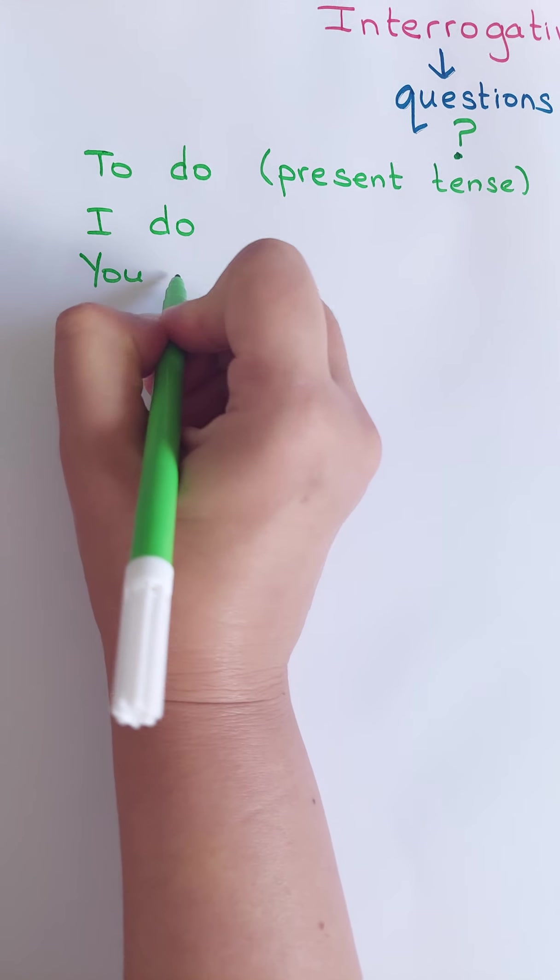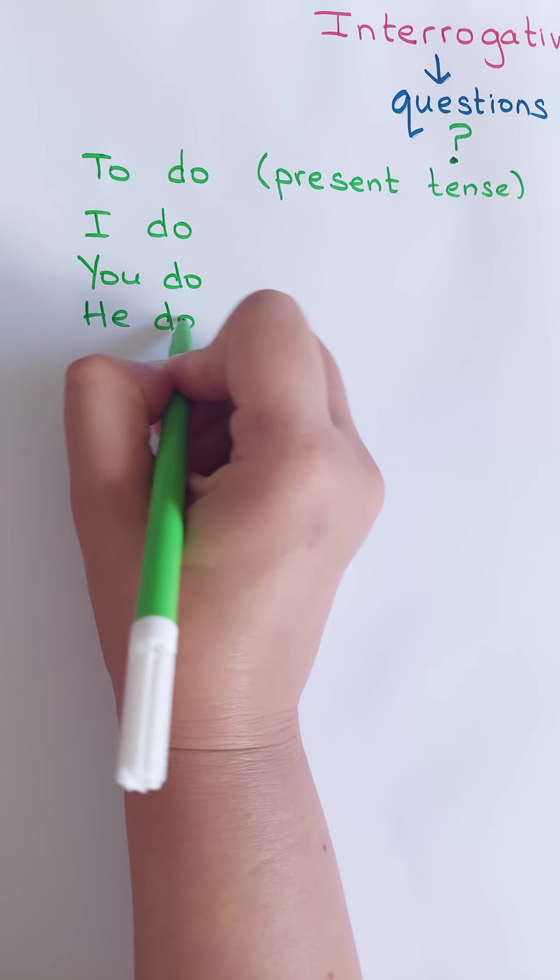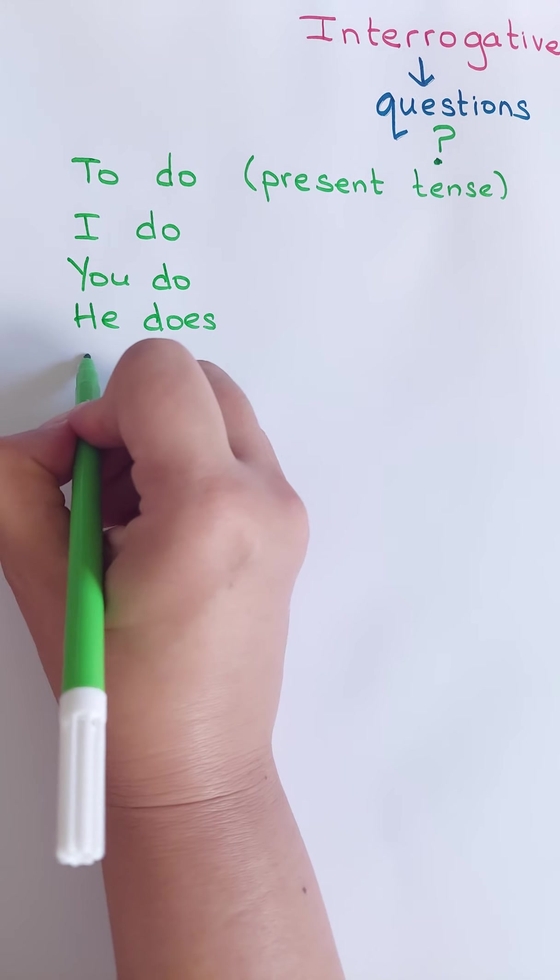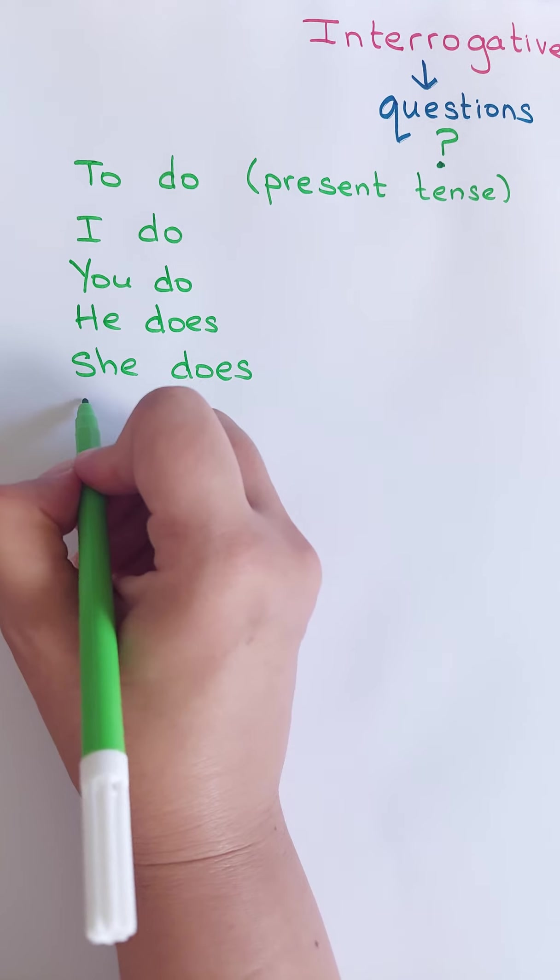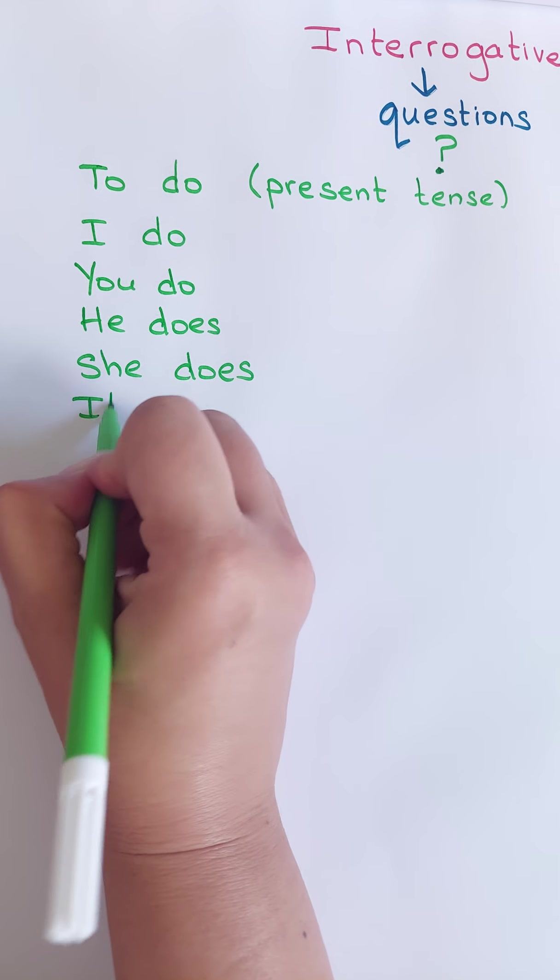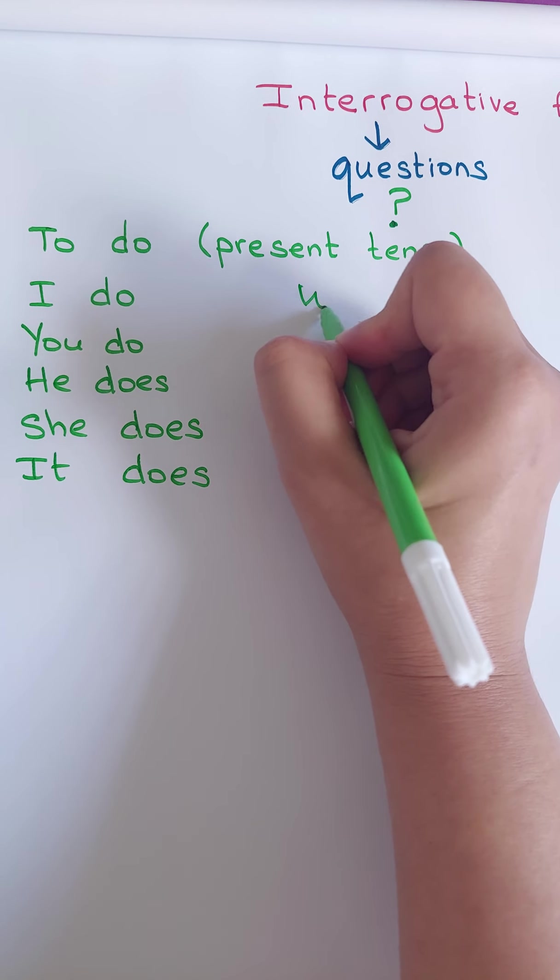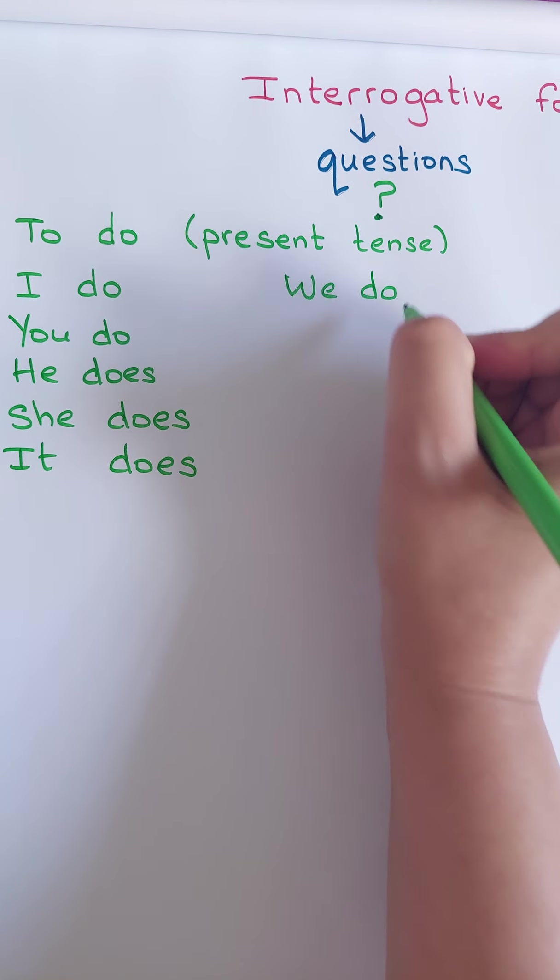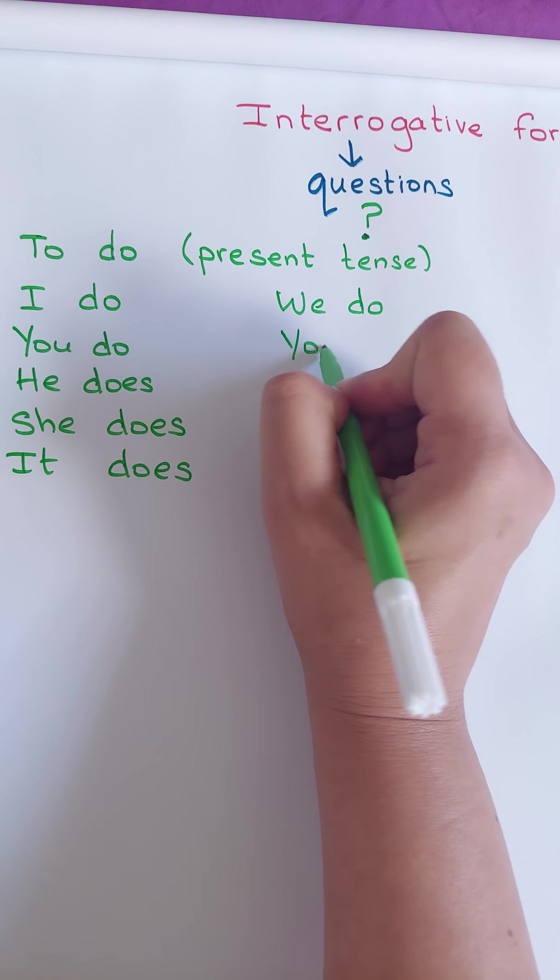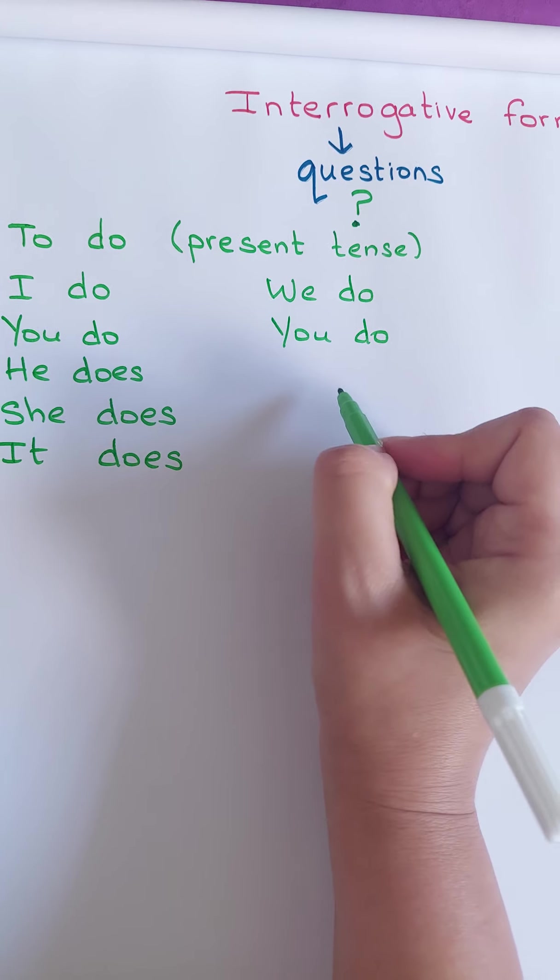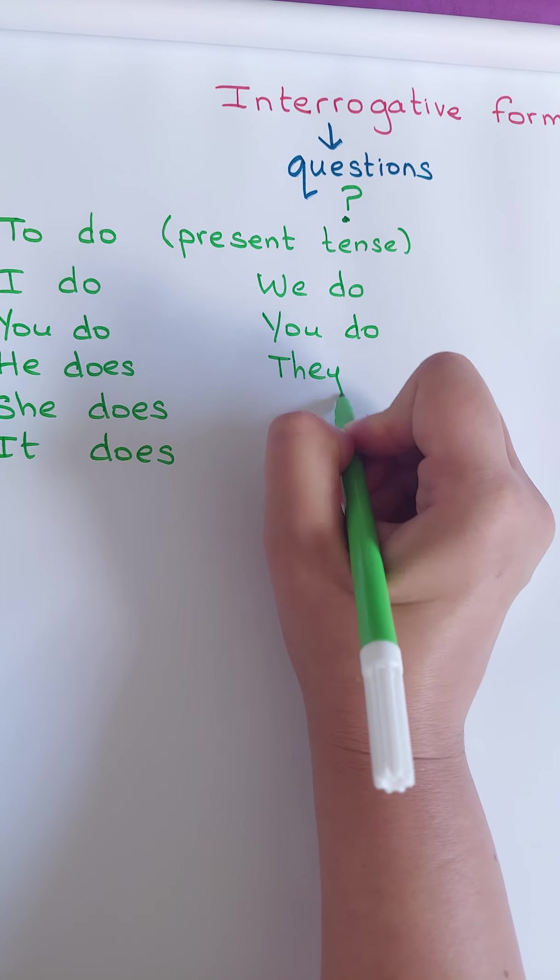Tu fais, you do. Il fait, he does. Elle fait, she does. Si c'est un chien, un chat, on dit it does. We do. We do, ça veut dire nous faisons. Vous faites, on va redire you do. Ils font ou bien elles font, on va dire they do.